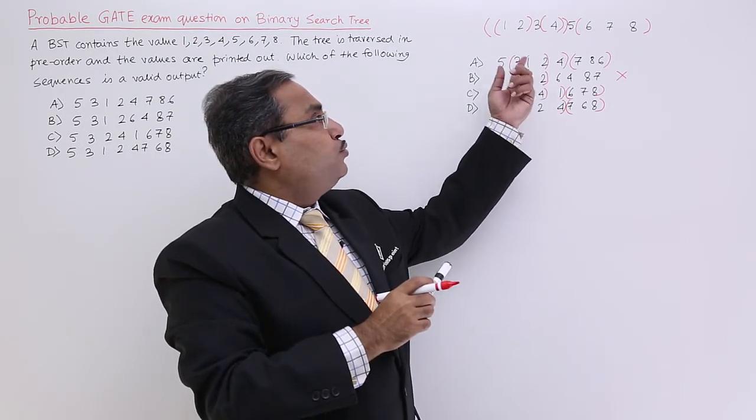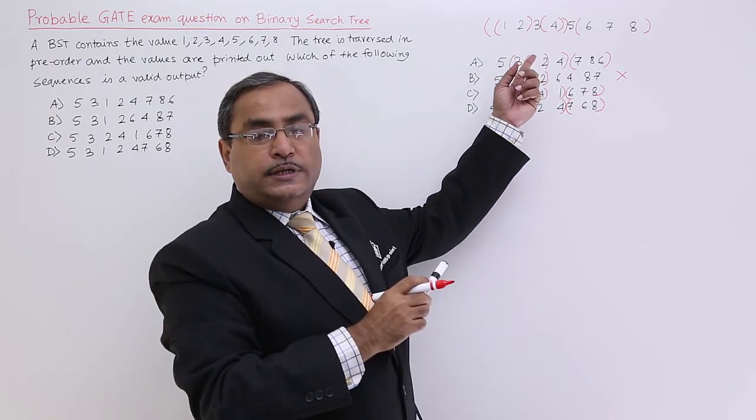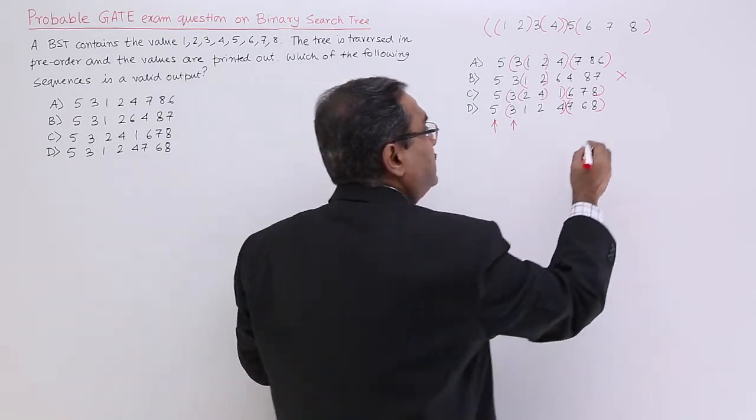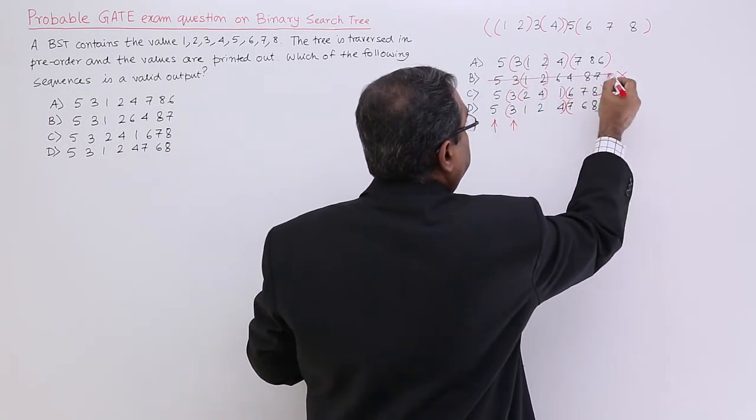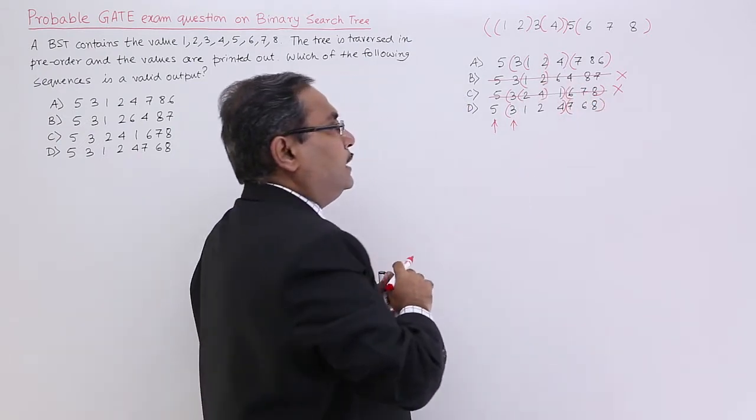They are taking 2 and 4. So 2 and 4 cannot come in this way because it is the pre-order traversal. So I am discarding this one. I shall not consider this and this. So I shall consider the rest 2.